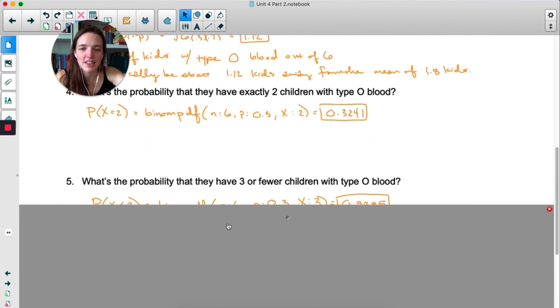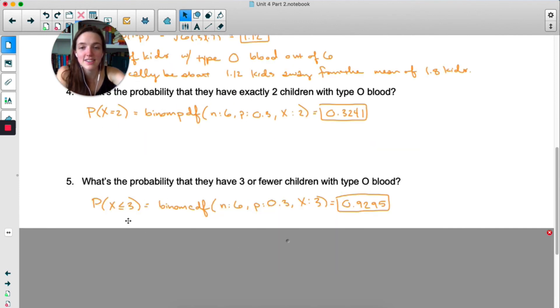The probability that they will have three or fewer children. So this is x less than or equal to 3. So I'm using binom cdf 6.3 and 3.